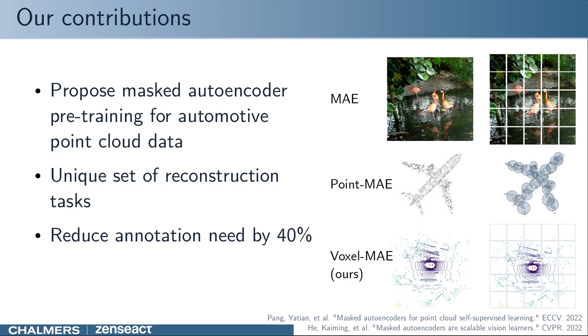In this work, we propose to use Masked Autoencoder pre-training for automotive point clouds. In the automotive domain, raw data for self-supervised learning is cheap, while annotations are expensive and time-consuming to create, making it a suitable candidate for pre-training.